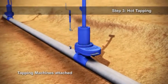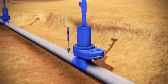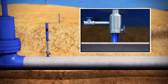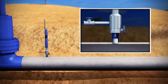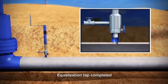Step 3: Hot Tapping. The tapping equipment is installed onto the isolation valves. The pressure equalization tap is completed first, allowing for proper equalization.